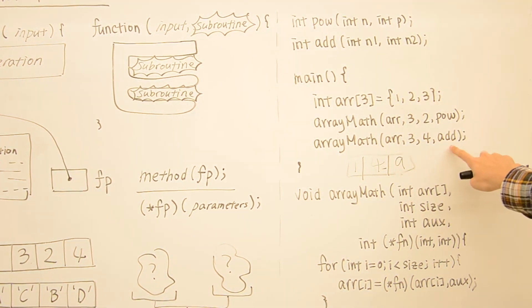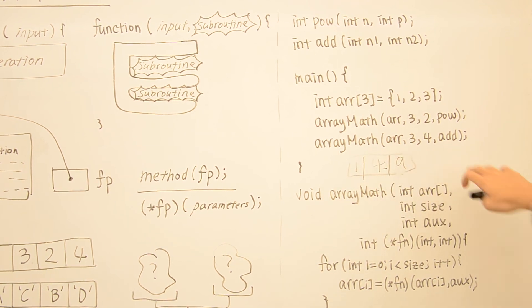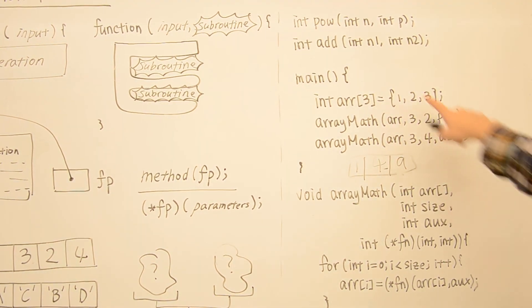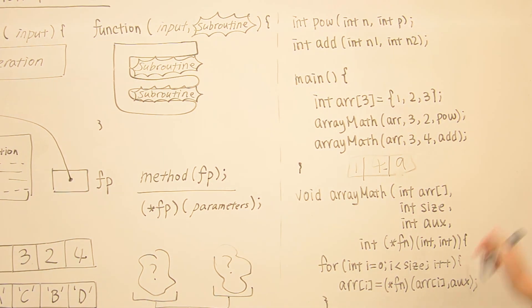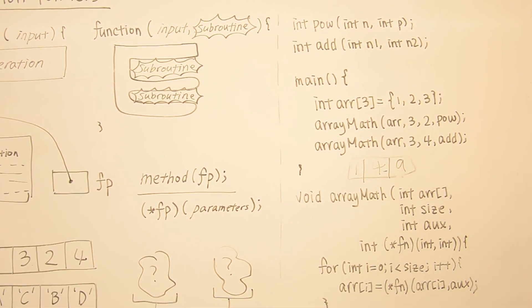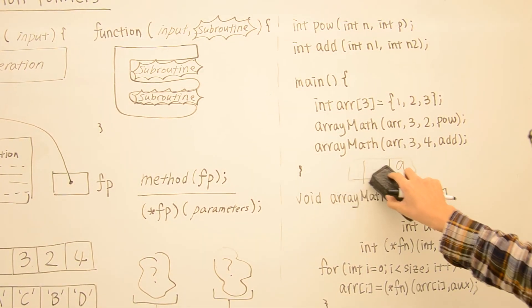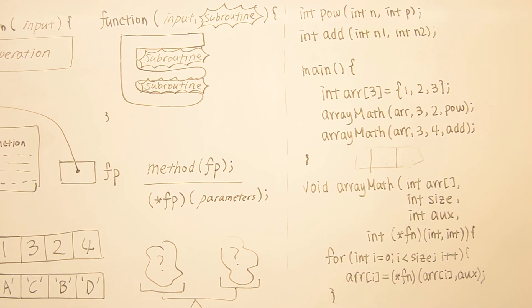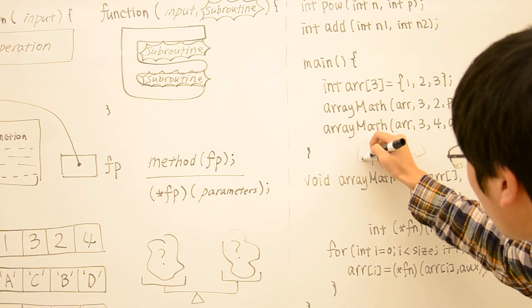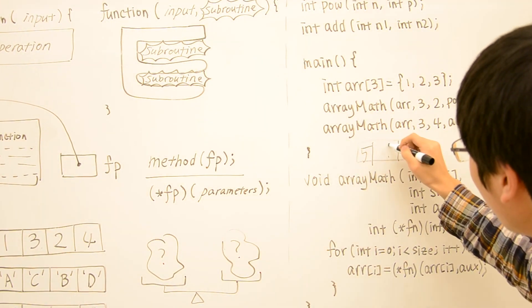And down here, when we call this method with add, again we're passing in the function pointer to this method, and we're simply adding 4 here to each element. So this becomes 5, 8, and 13.